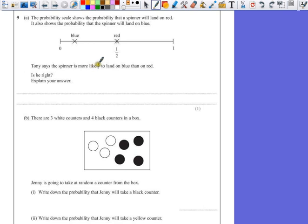Tony says the spinner is more likely to land on blue than on red. Is he right? Explain your answer.